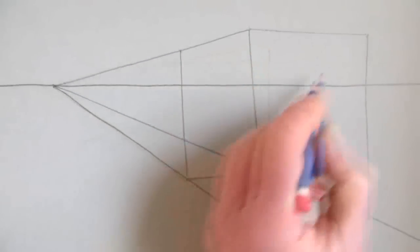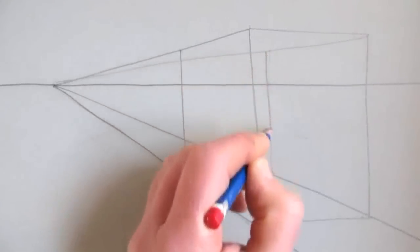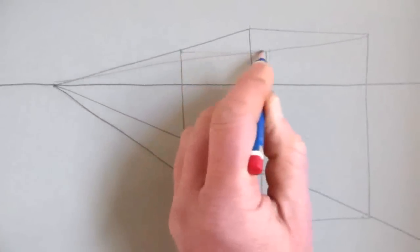Now we have a transparent cuboid in one point perspective. All the lines of the train will fit into this cuboid and follow its perspective.